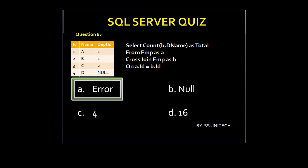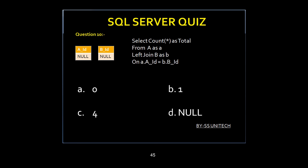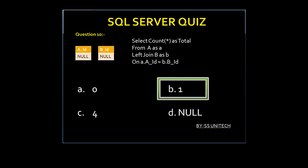Let's move to another question. Time up. Option B is true, because when we use a specific column in COUNT, it looks for null values and skips them, whereas COUNT(*) returns all rows regardless of whether they have null values or not. So option B is true.